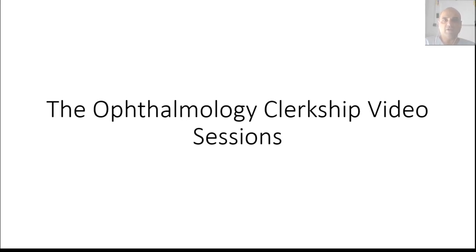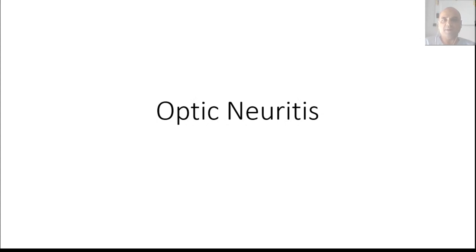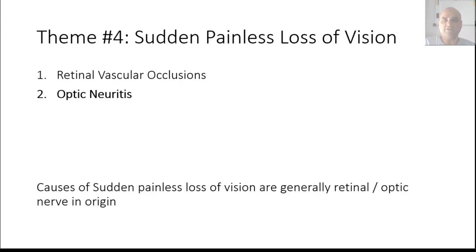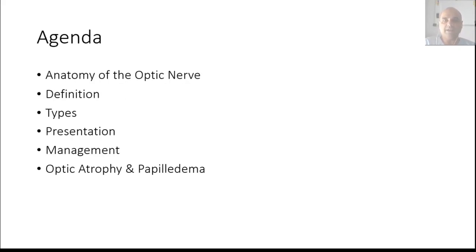Assalamu alaykum students, and we are continuing on with our ophthalmology clerkship video sessions. Today we'll be talking about optic neuritis, which is our second differential in the theme of sudden painless loss of vision. We will cover the anatomy of the optic nerve, the definition of optic neuritis, its types, how patients present, management, and finally optic atrophy and papilledema. Optic atrophy can occur as a sequelae of optic neuritis, and papilledema is an important differential diagnosis.